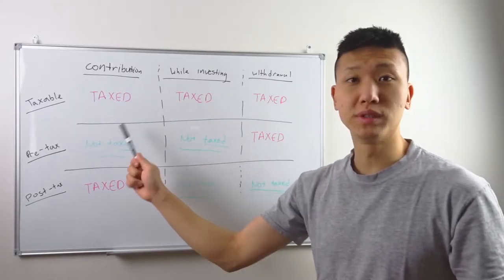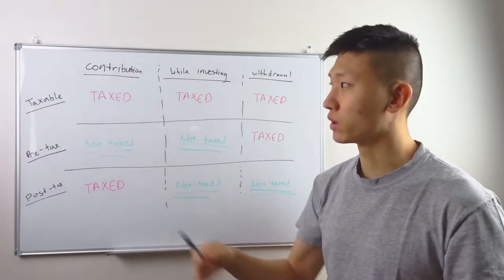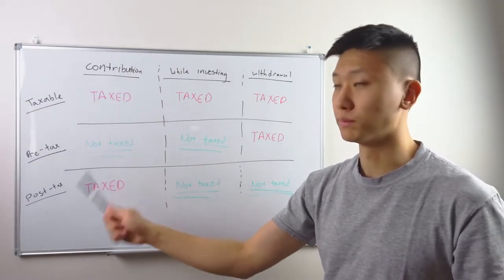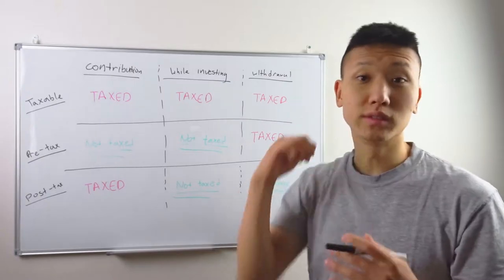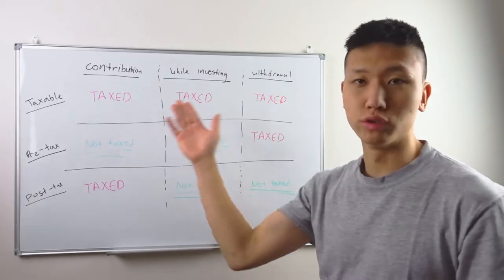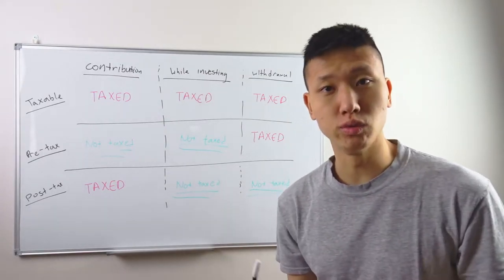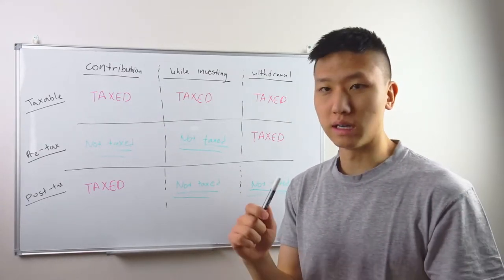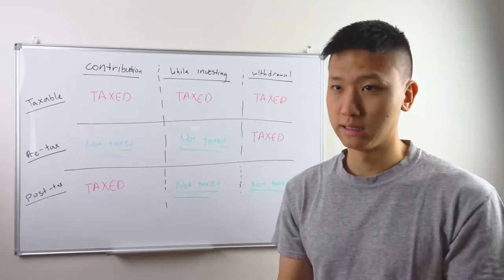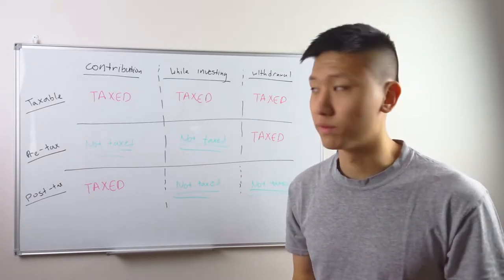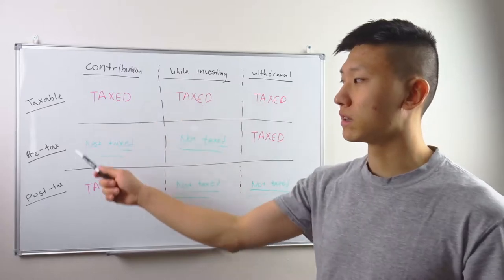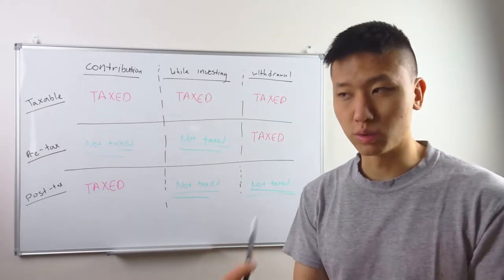The best way to think about all of these is to think of them like a vehicle, almost like a car. We have three different vehicles: taxable, pre-tax, and post-tax. You are going through the journey of investing, and the things you put into the car are ETFs, mutual funds, stocks, and bonds — things you're already familiar with.